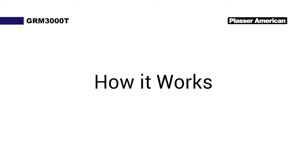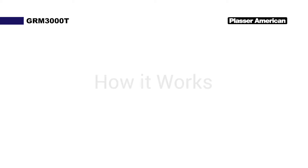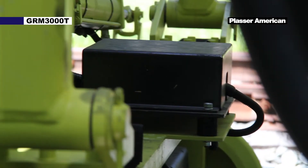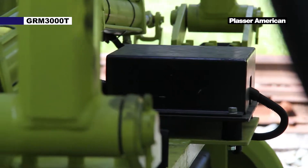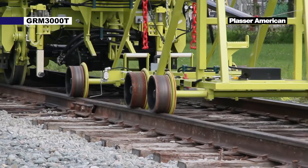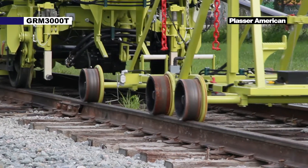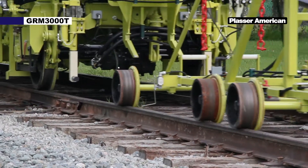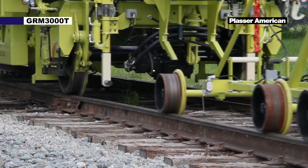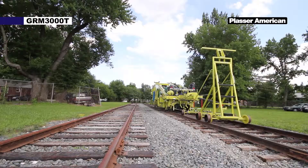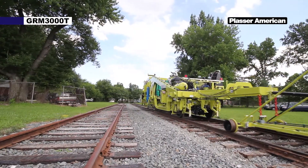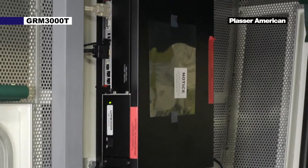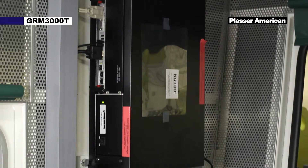AGGS obtains and processes data which it receives from the sensors on the lining buggy during a measuring event. The measuring process of collecting data — line, cross level, and surface information — is known as a measuring run. That data is stored in files on the AGGS PC.